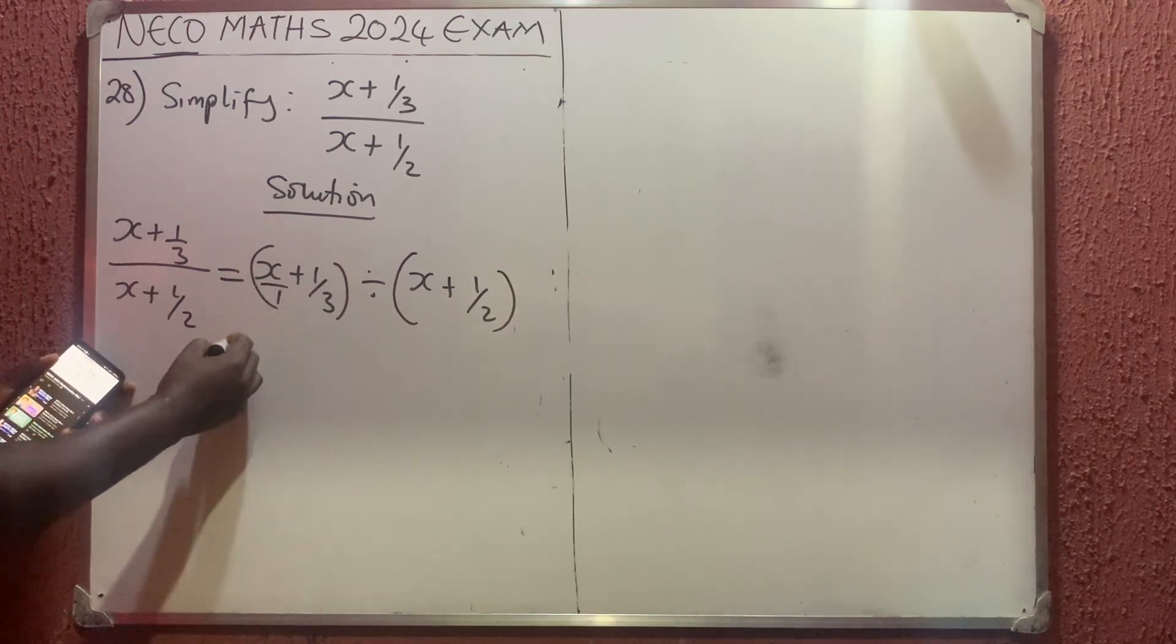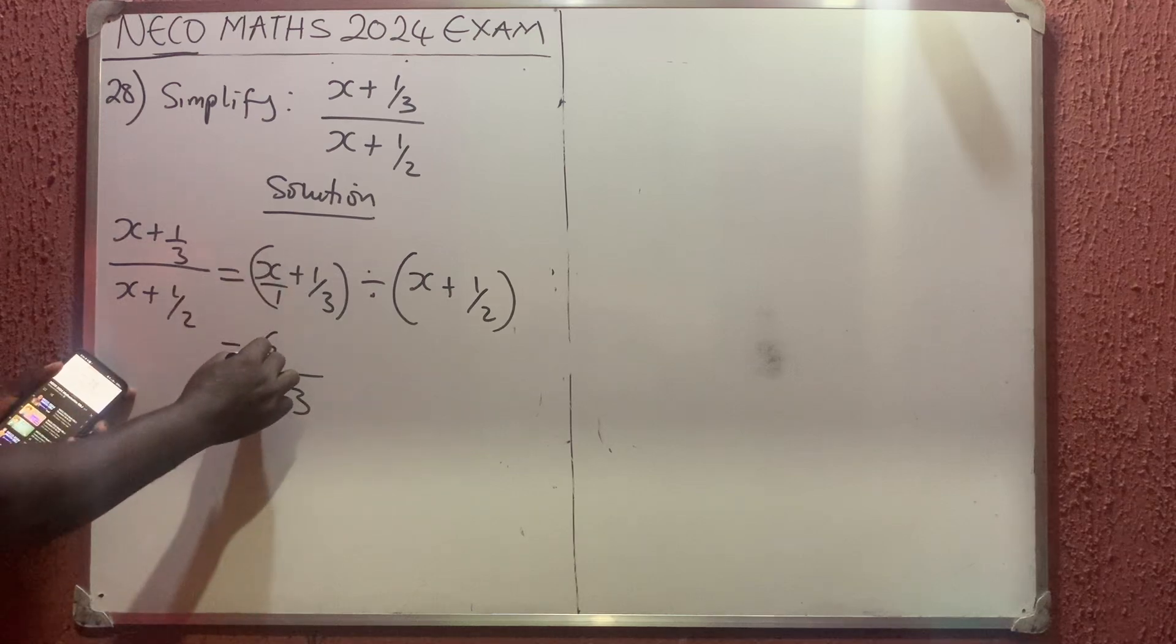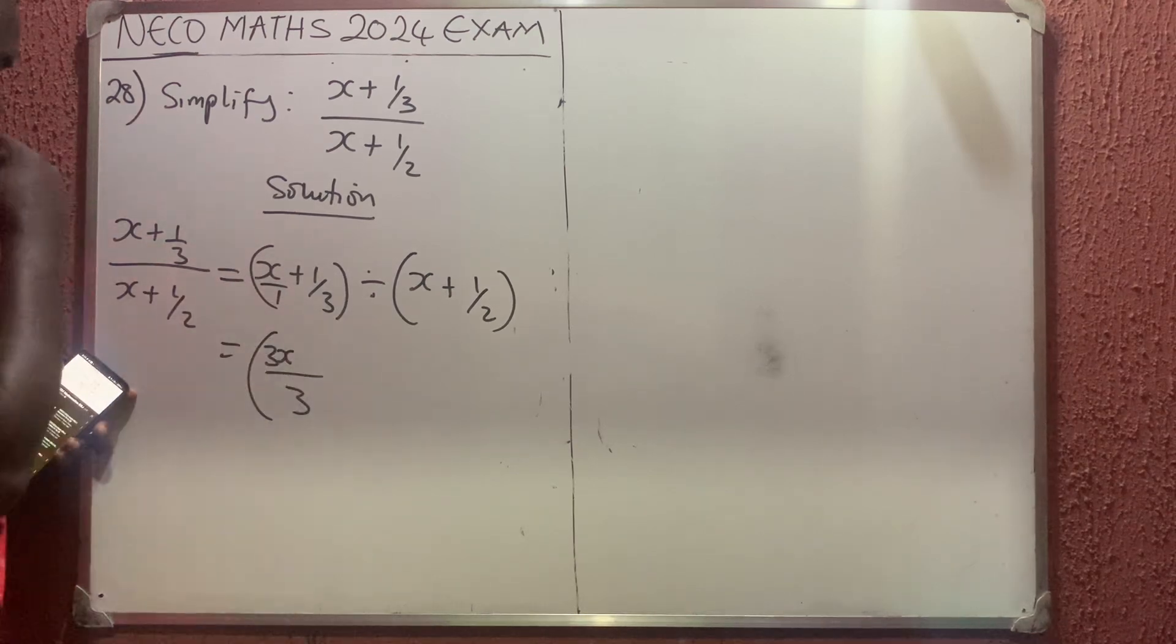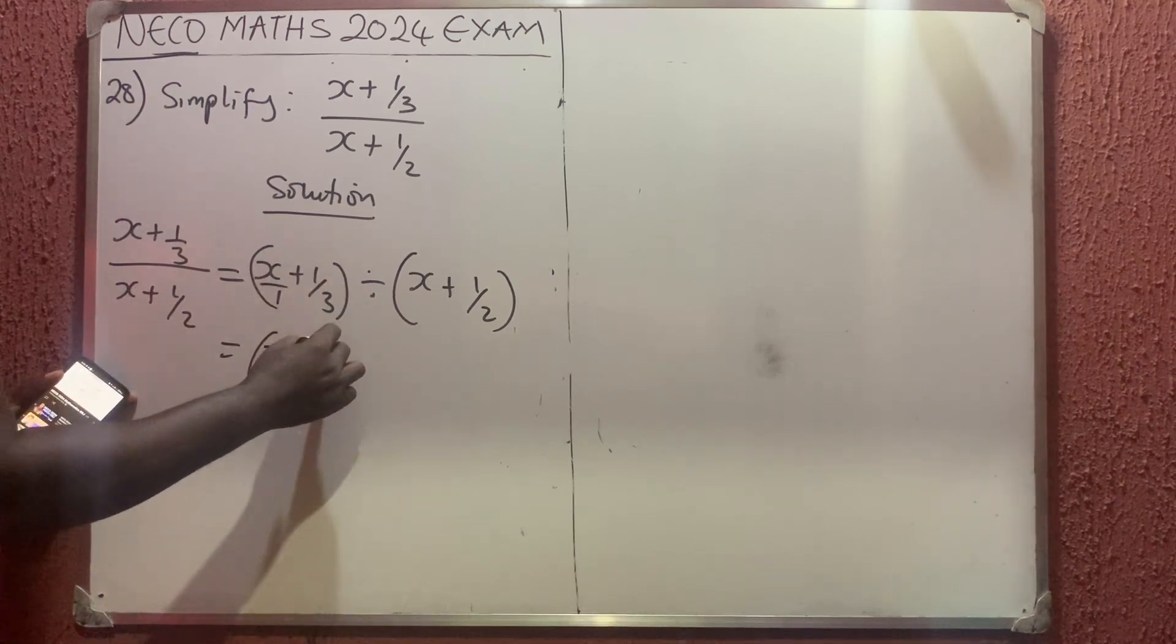The LCM for the numerator is 3. Multiplying through: 3 times x gives 3x, and 3 times 1/3 gives 1, so we have (3x + 1)/3.